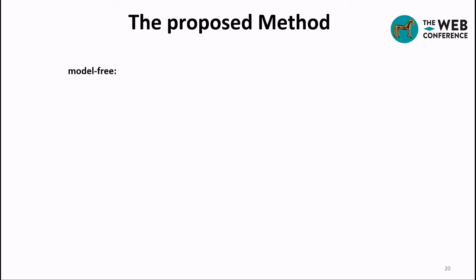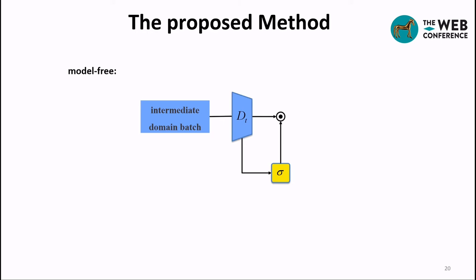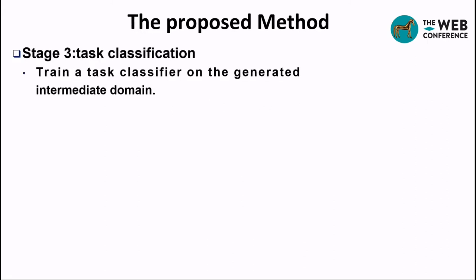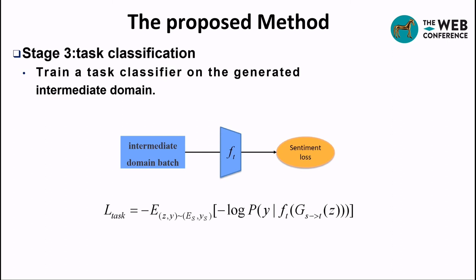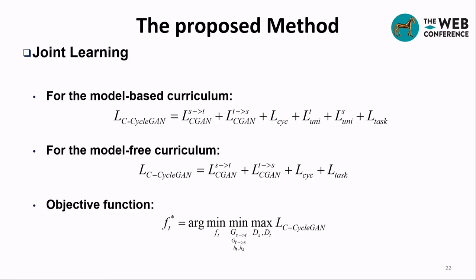In the model-free method, we notice that the source selection network scores intermediate domain samples based on the distance from their distribution to the real target distribution, which is exactly what the discriminator does. Therefore, we design a model-free method to replace the complicated weighting mechanism with the softmax result of the discriminator's output. Stage 3: we train a task classifier on the generated intermediate domain. Stage 4: our final objective is a weighted combination of different losses in the C-CycleGAN framework, optimized by solving a min-max game.